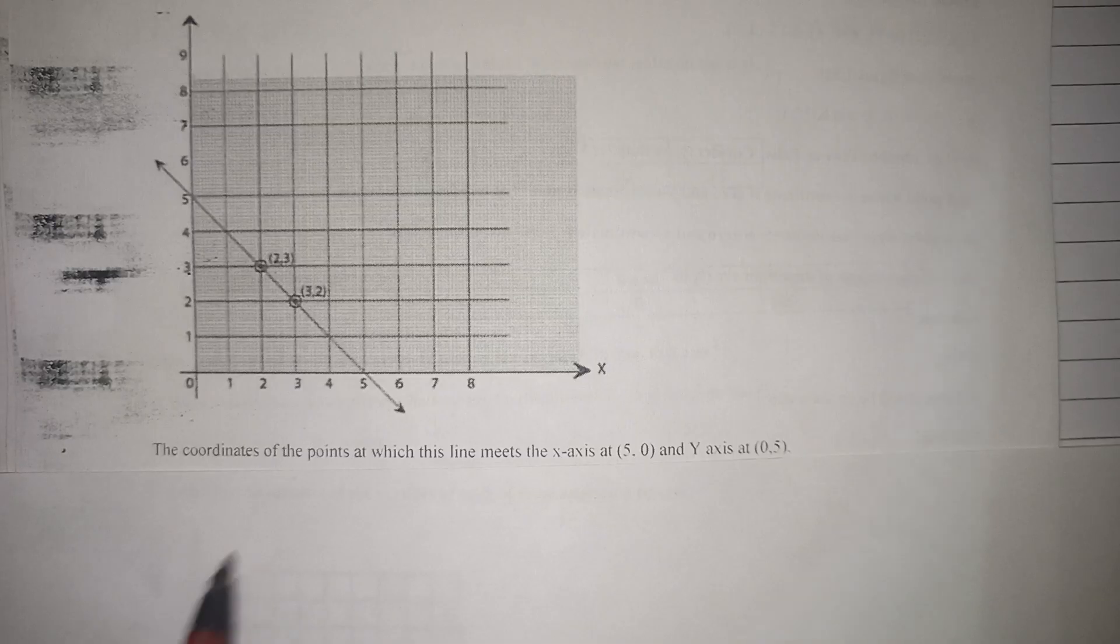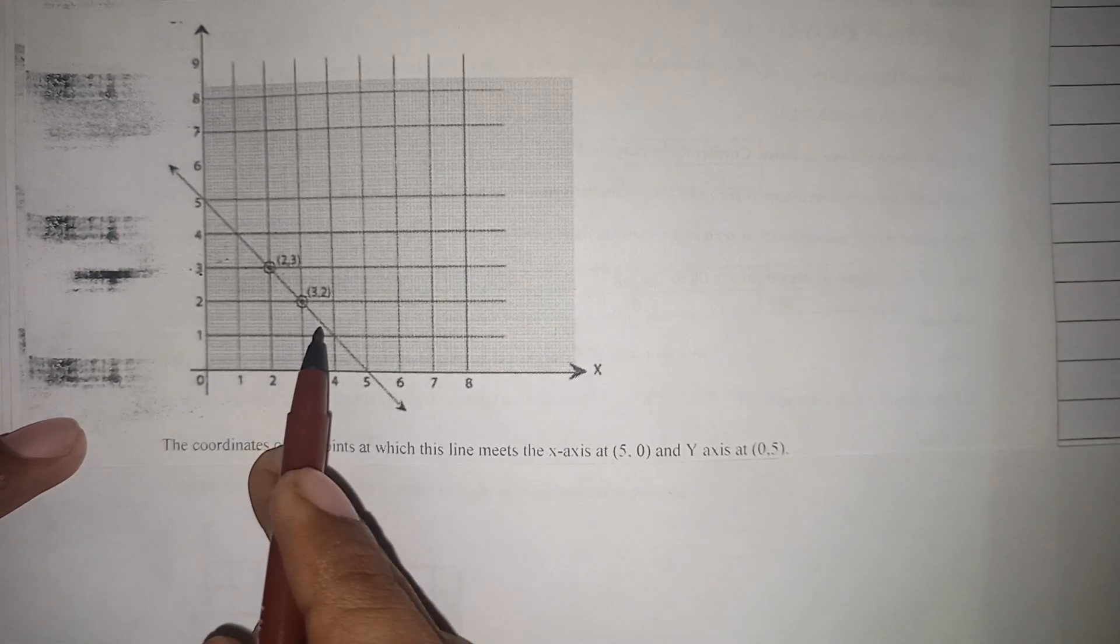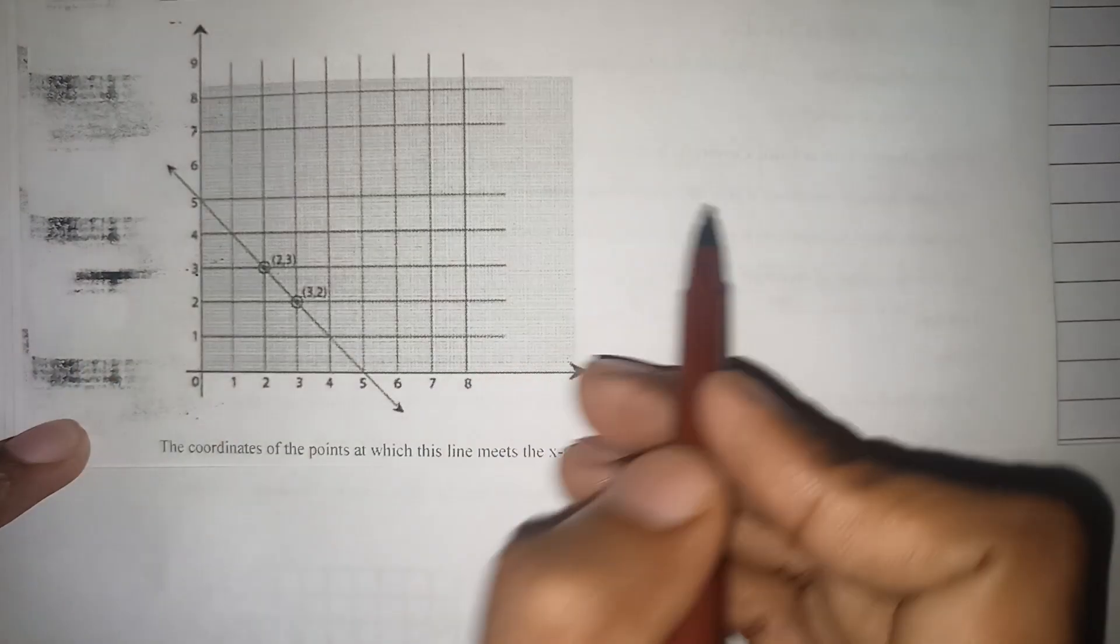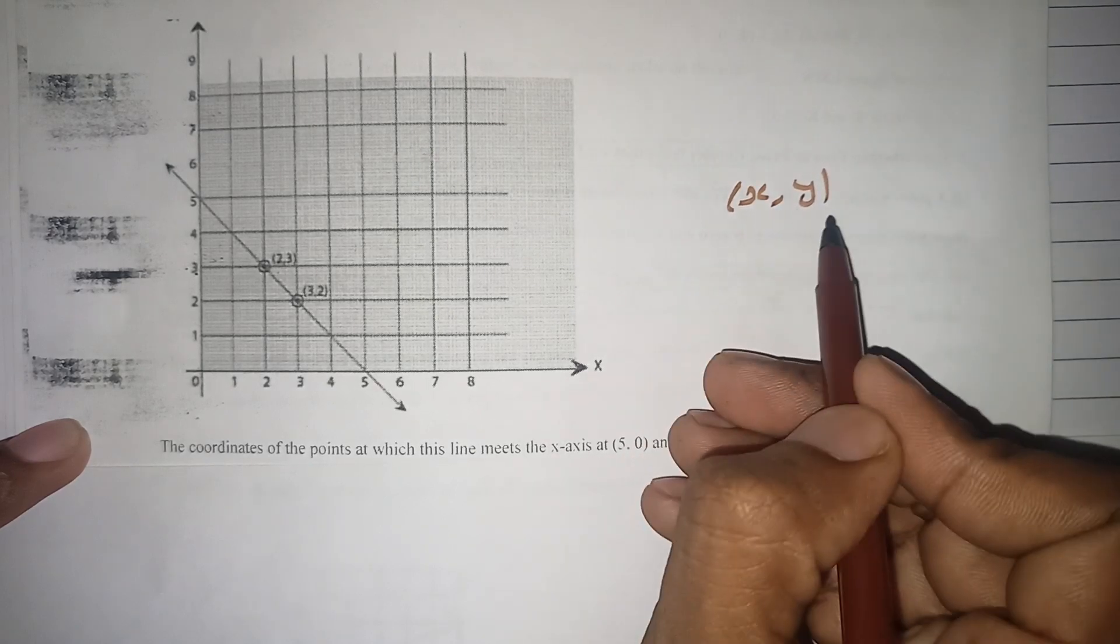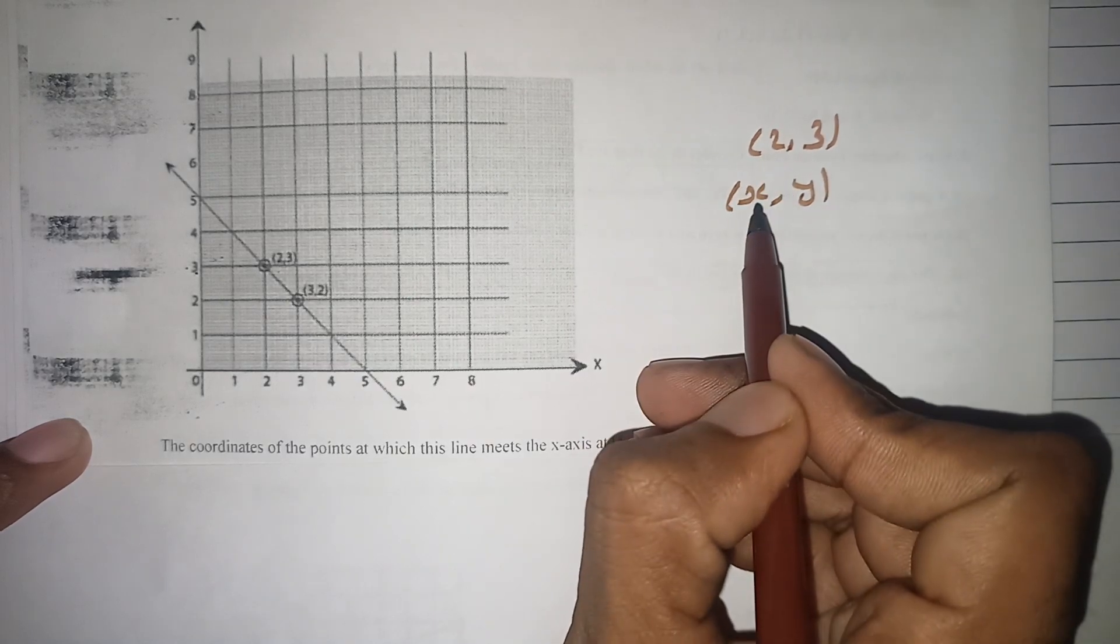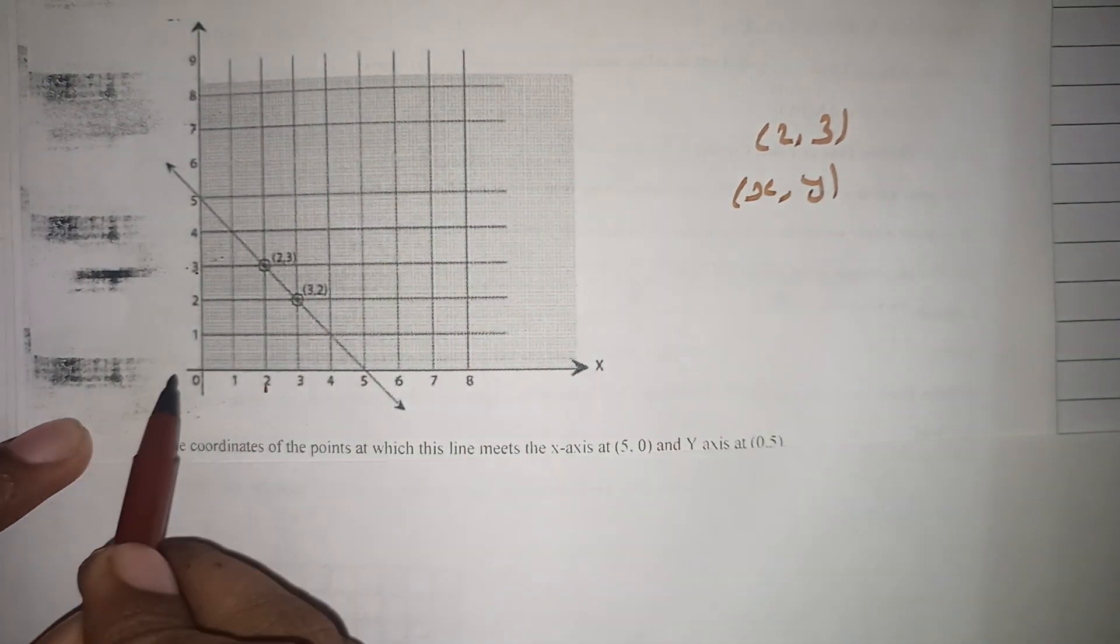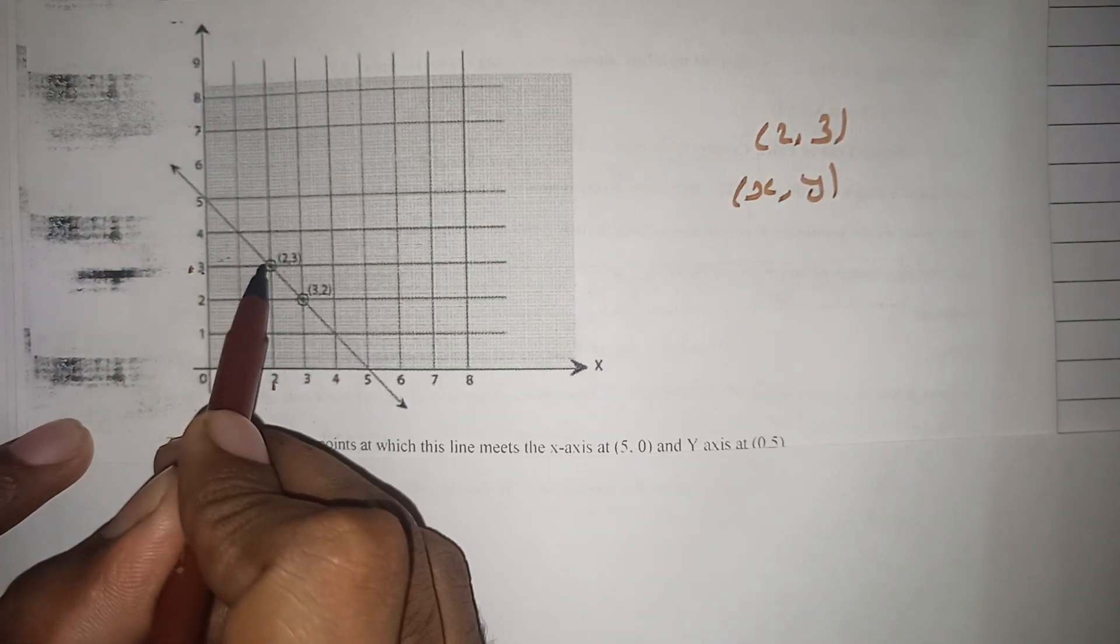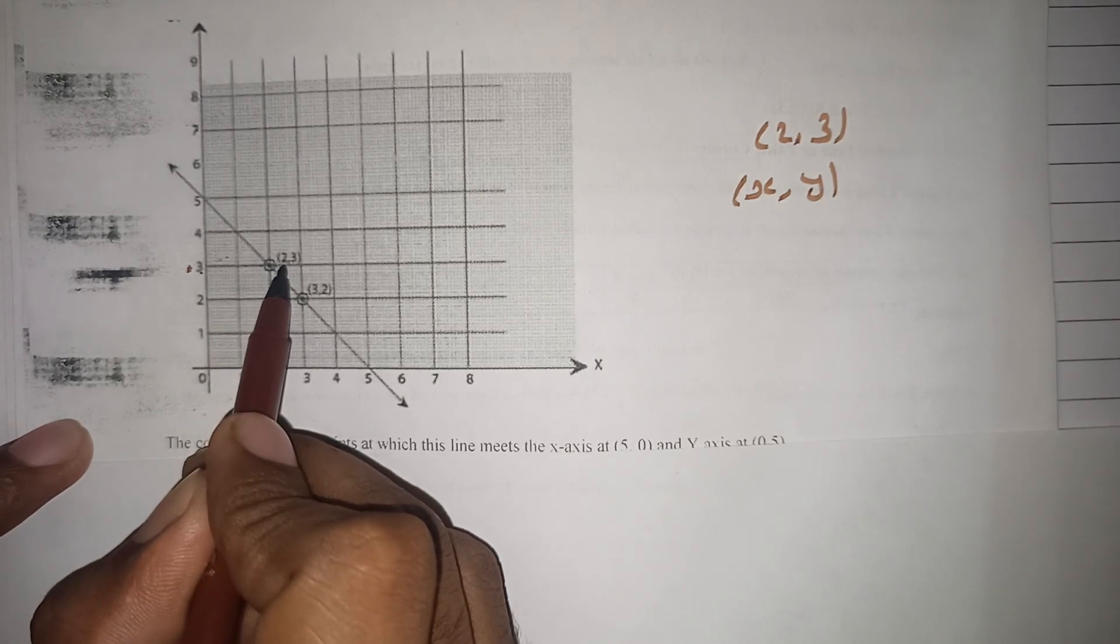So first of all, we have the graph. We'll plot 2,3 - so 2 on the x-axis and 3 on the y-axis, which is around here. So this is the point (2,3). This line passes through here.